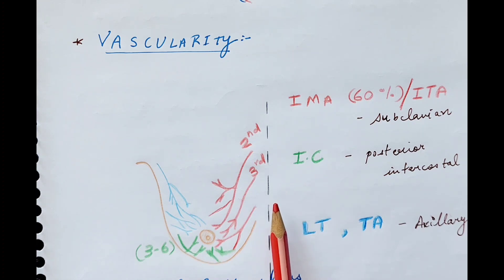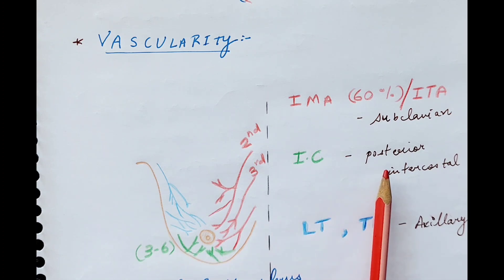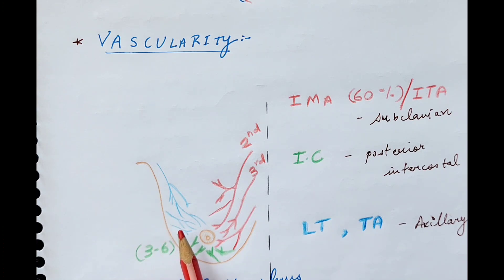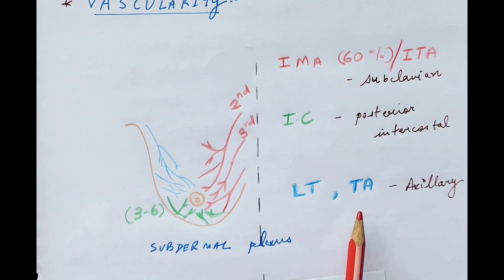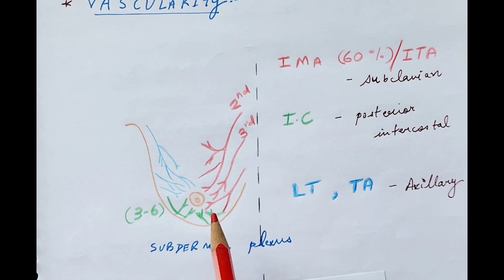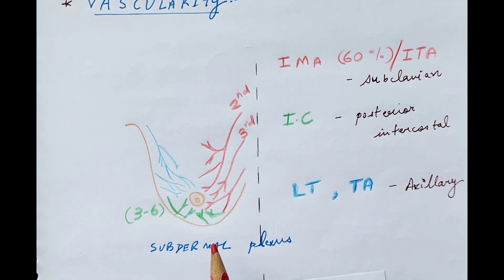On the lateral side, contributions come from the posterior intercostal vessels from the third to sixth spaces, and from the axillary artery, which gives branches like the lateral thoracic and thoracoacromial branches. All of these form a very rich anastomal plexus below the nipple areola complex (NAC), and the main supply to the NAC is via this anastomosis in the subdermal plexus.